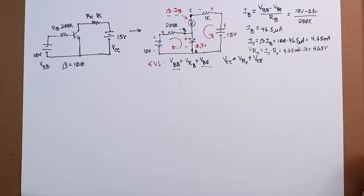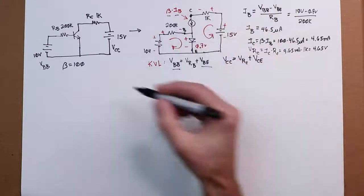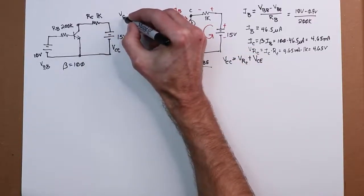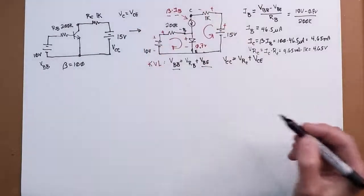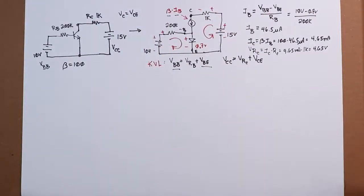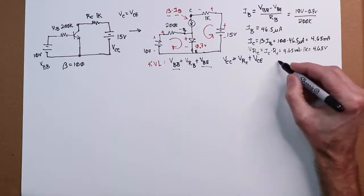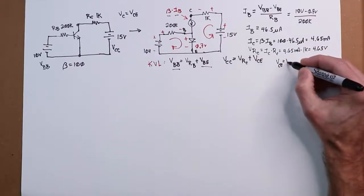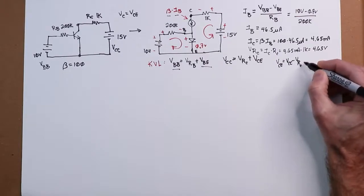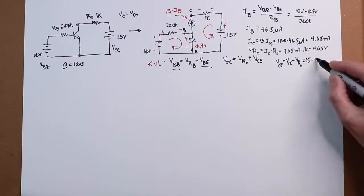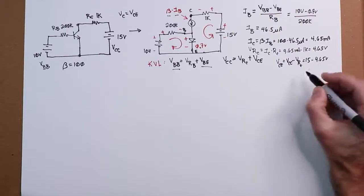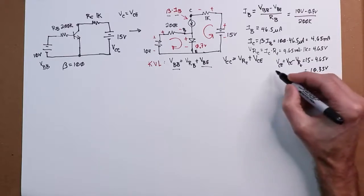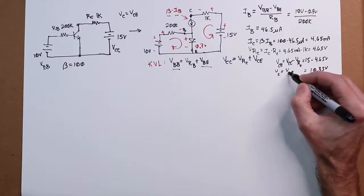The only thing left is VCC, which in this circuit is the same as VC, right? VC would be the drop from collector to ground. The emitter is at ground, so in this particular circuit VC is the same as VCE because VE is 0. That's not always the case in all circuits, but it is the case here. So finally, we can say that VC or VCE is simply equal to the power supply VCC minus the drop on the collector resistor. So that's 15 minus the 4.65, which equals 10.35 volts.